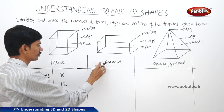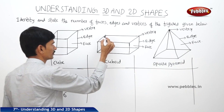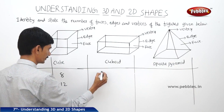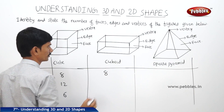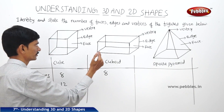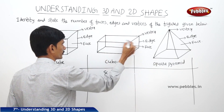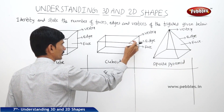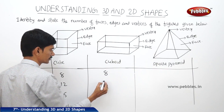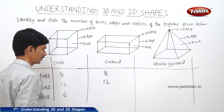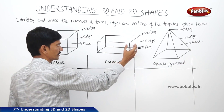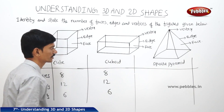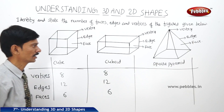Now in the case of a cuboid, the vertices are also one, two, three, four, five, six, seven, eight — eight vertices, same as in the case of a cube. And next is the square pyramid.